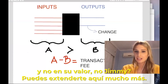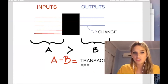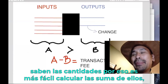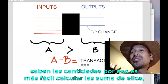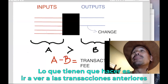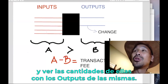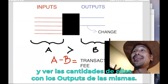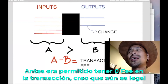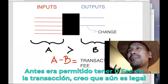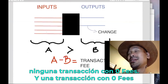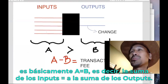Outputs have an amount field so you can easily calculate their sum. Inputs are trickier — there's no amount field, so you have to look up the previous transaction and get the amount from its output, then sum those up; the difference is the transaction fee. A zero-fee transaction — where inputs equal outputs — is still technically legal in a block, but no node will forward such a transaction.